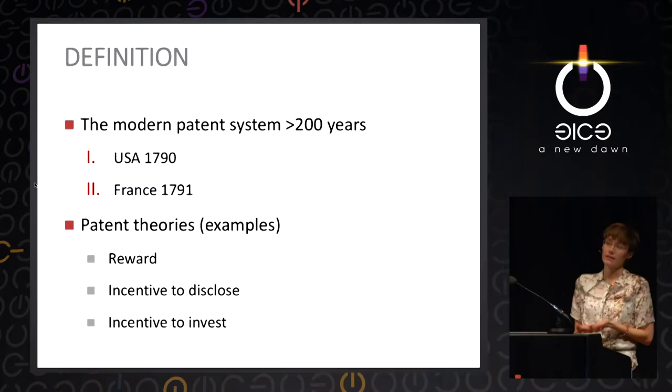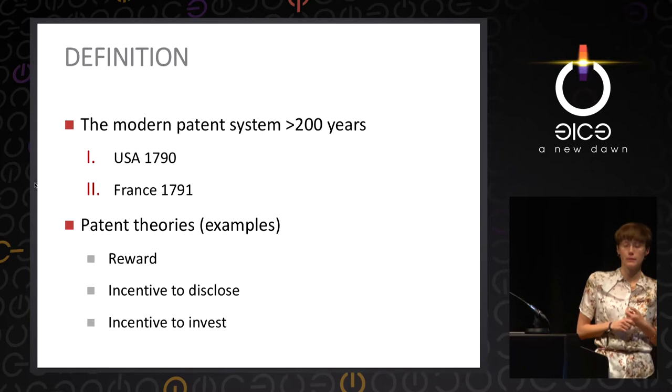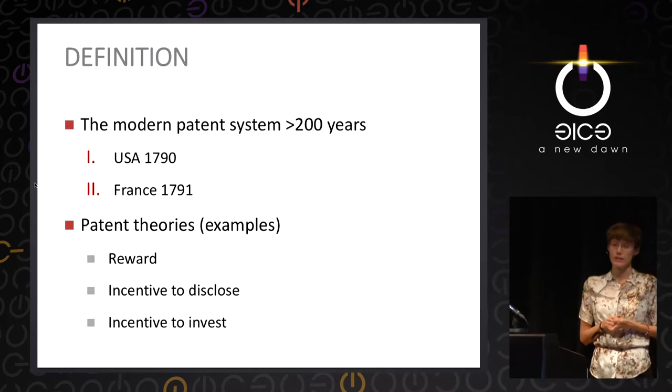Modern patent systems are around 200 years old. The first US Patent Act was enacted in 1790, then followed by France. Patents have various justifications and theories. Here I present three I found most important. First, the reward theory: patents are a reward for undertaking efforts and investment. This reward theory underlies other theories and I find it the most important. The reward is a market monopoly for 20 years — exclusivity on the market to use, license, and enforce the right.